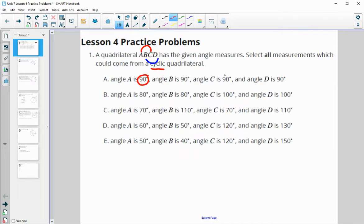In this first one, angle A is 90 and C is 90. Those total 180, so that's good. B is 90, D is 90, so that's good. So this one is cyclic.